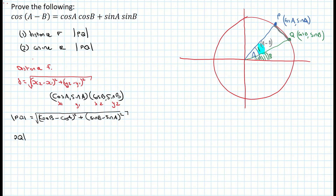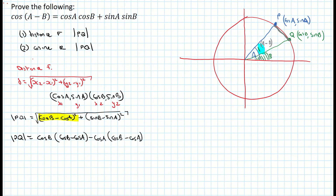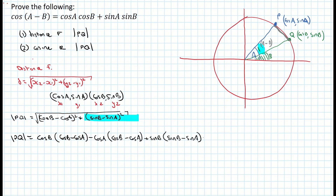The distance from P to Q equals — I'm going to work on expanding each part. The first bracket squared gives: cos B multiplied by (cos B minus cos A), then minus cos A multiplied by (cos B minus cos A). The second part: sin B times (sin B minus sin A), minus sin A times (sin B minus sin A). And don't forget that is all within the square root.